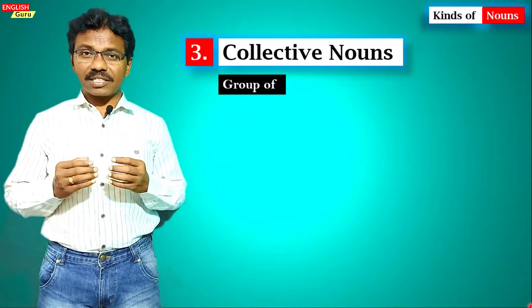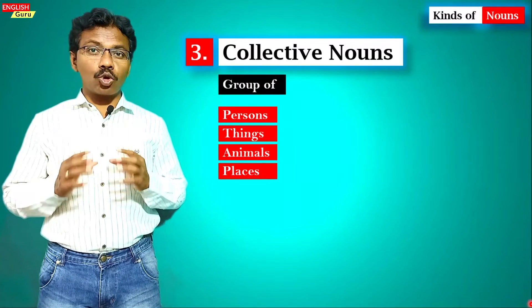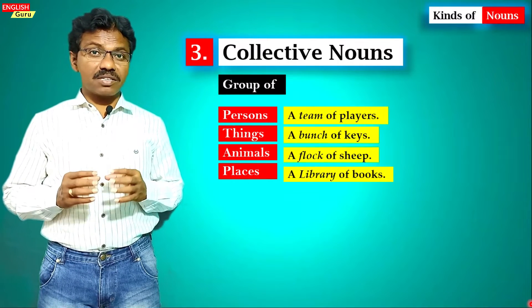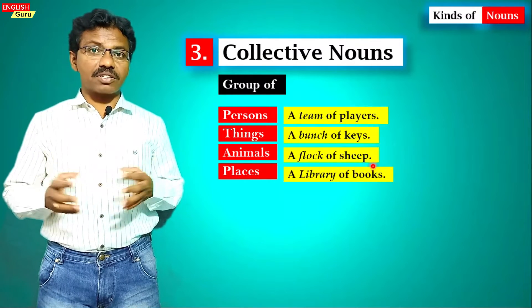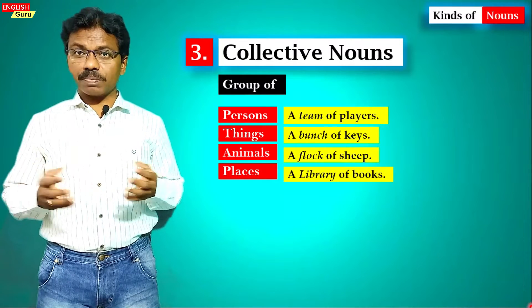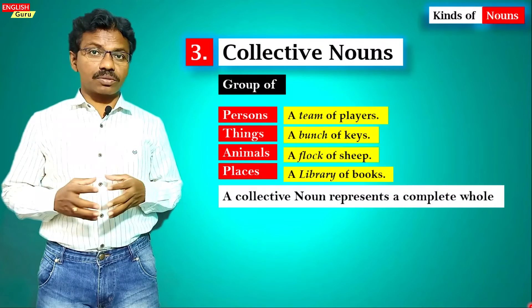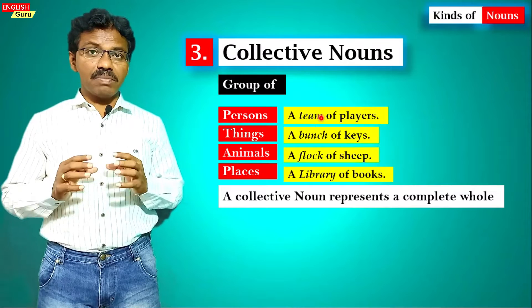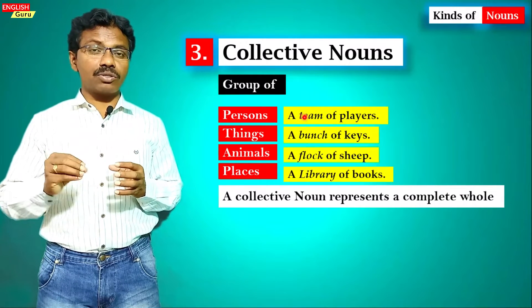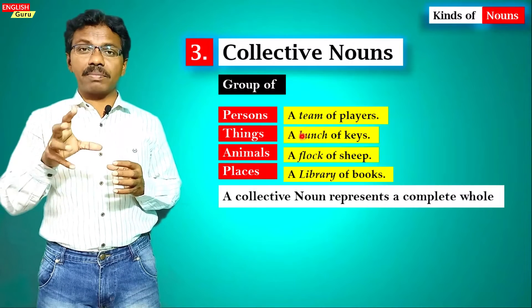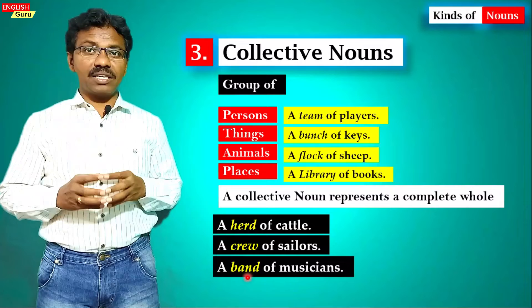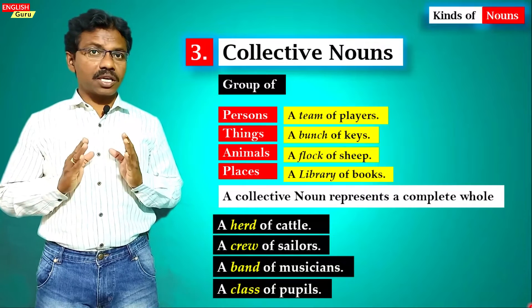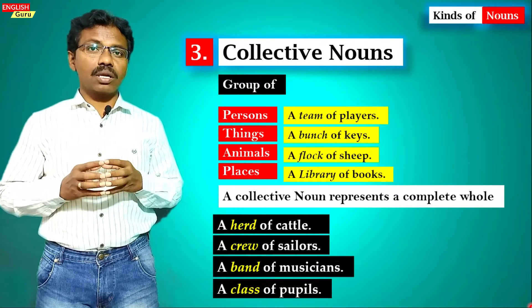The third kind is collective nouns — a group of persons, things, animals, or places. For example: a team of players (persons), a bunch of flowers (things), a flock of sheep (animals), a library of books (places). Collective nouns represent a complete whole — a team includes all 10 to 11 players. Other examples: a herd of cattle, a crew of sailors, a band of musicians, a class of pupils. The collection of one kind put together is called a collective noun.